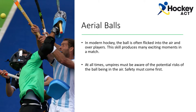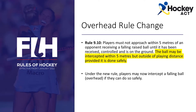There are many rules that we need to remember with aerial balls, and these are related to the danger or potential danger of the ball being projected into the air, and also when the ball is landing. Rule 9.10 states that players must not approach within 5 metres of an opponent receiving a falling raised ball until it has been received, controlled and is on the ground. The yellow highlighted section on your screen is the new rule change.